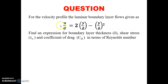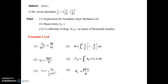The best way to solve any numerical is to read the question multiple times. After reading the question carefully, when it becomes clear what data is given in the question and what we need to find, then we are able to solve numericals very easily and comfortably. In this question, the given data is the velocity distribution u/U = 2(y/δ) − (y/δ)², and we need to find the expression for boundary layer thickness delta, shear stress tau naught, and coefficient of drag CD in terms of Reynolds number.